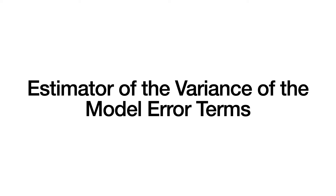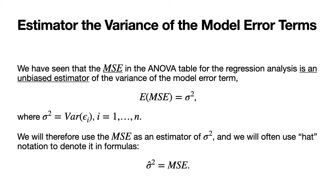Let's first review the estimator of the variance of the model error terms. We've seen that the MSE — the mean squared error in the ANOVA table for the regression analysis — is an unbiased estimator of the variance of the model error term. In other words, the expected value of MSE is equal to sigma squared, where sigma squared is the variance of the epsilon sub i's, i going from 1 to n. We will therefore use the MSE as an estimator of sigma squared, and will often use hat notation to denote it, so in some cases we'll use MSE and in other cases sigma hat squared.